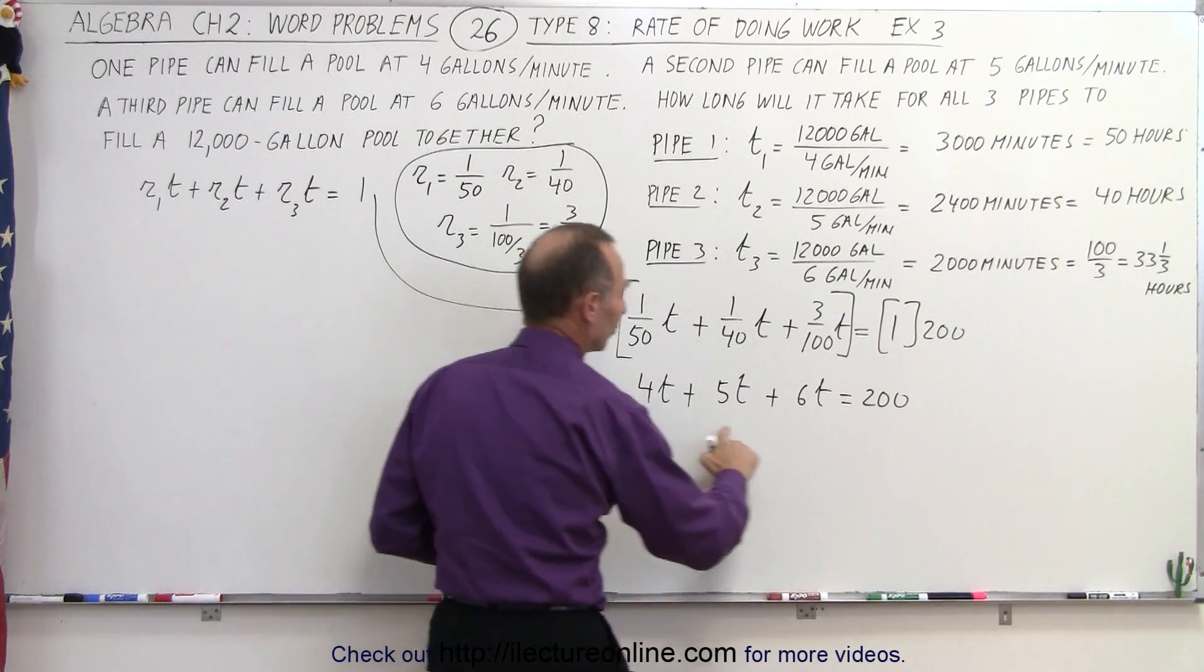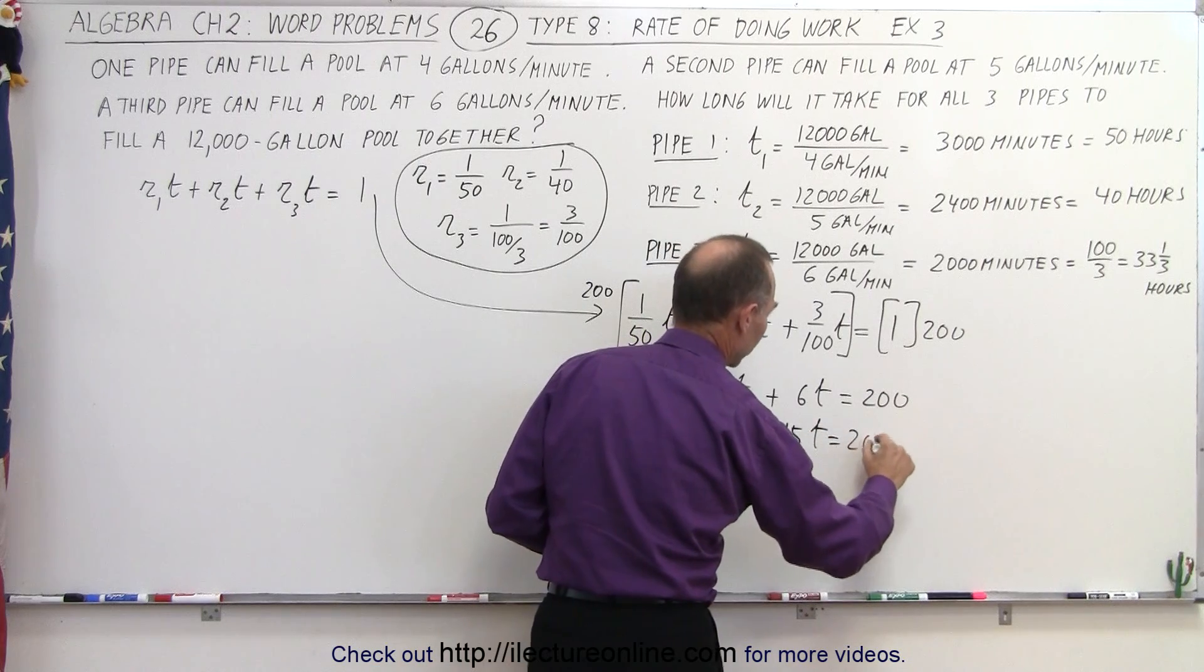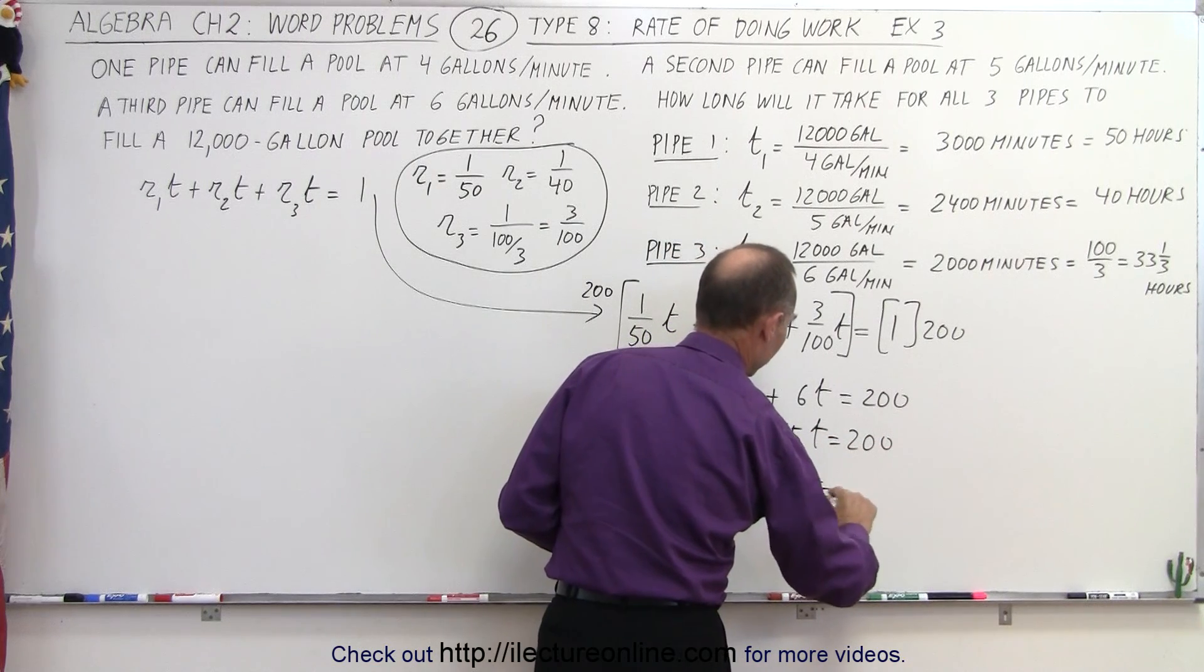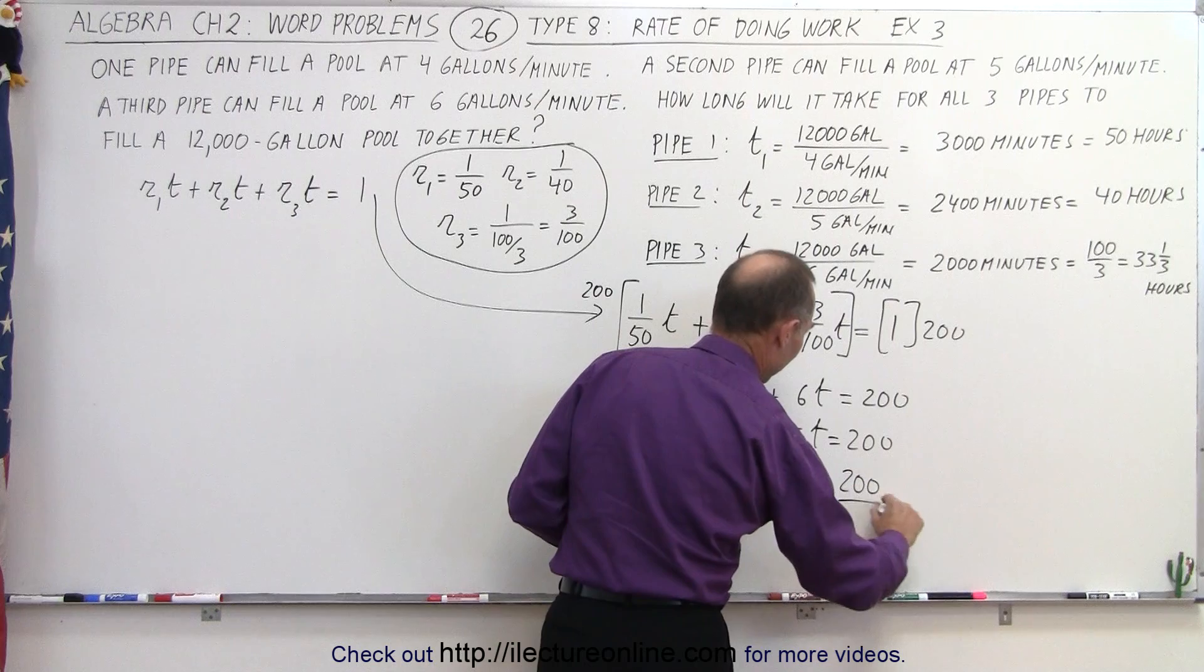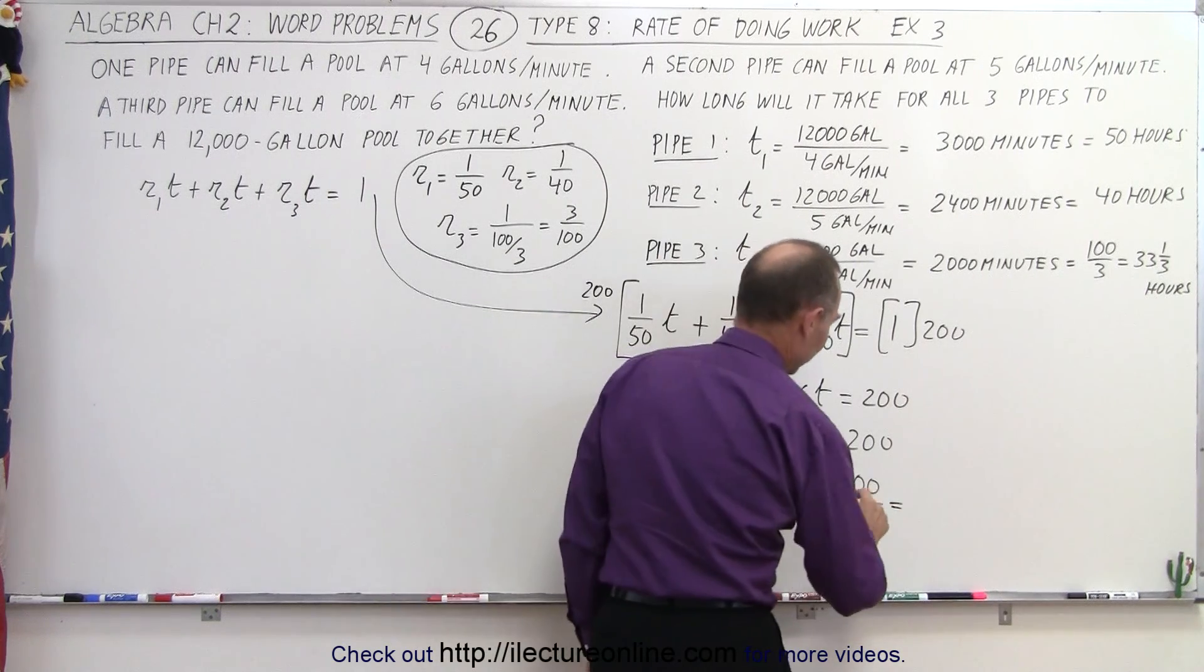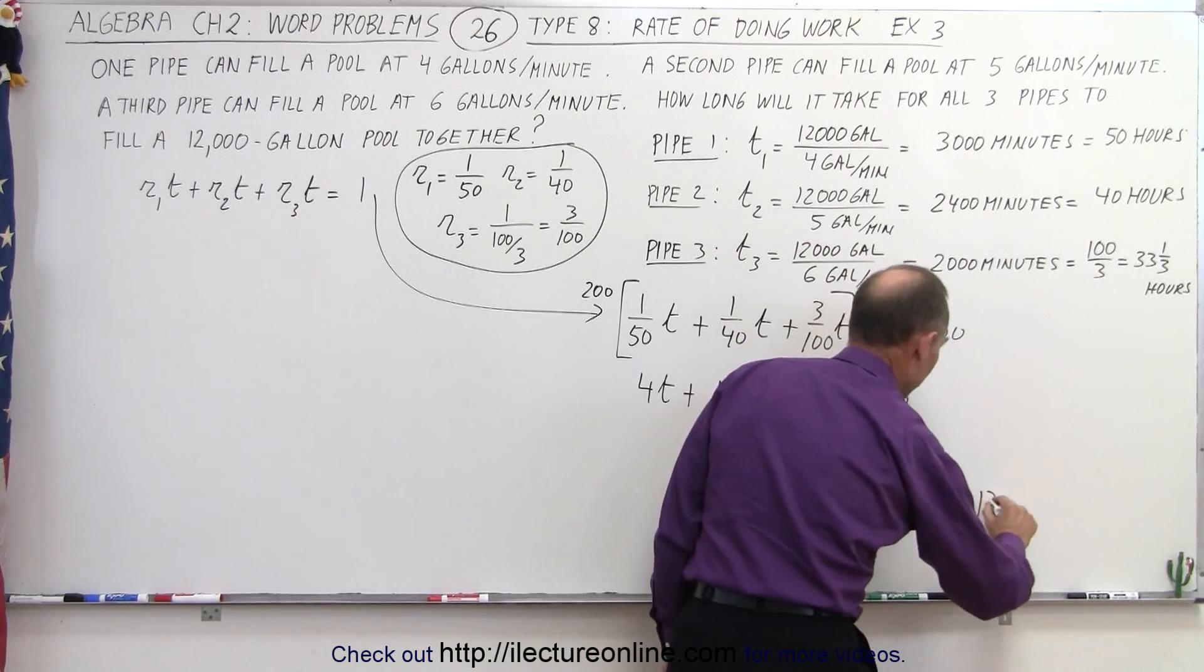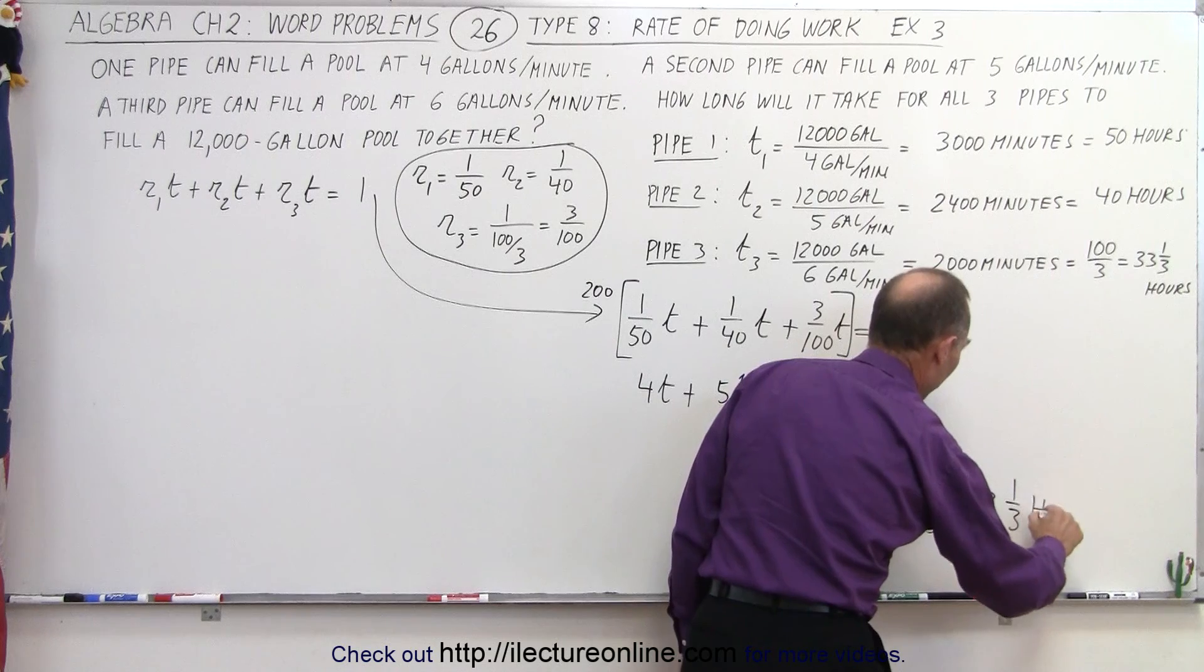I can now add all these together. So 4 plus 6 plus 5, which is 15t, is equal to 200. So t is equal to 200 divided by 15. I can divide both by 5, so that would be 40 divided by 3, and that would be 13 and a third hour.